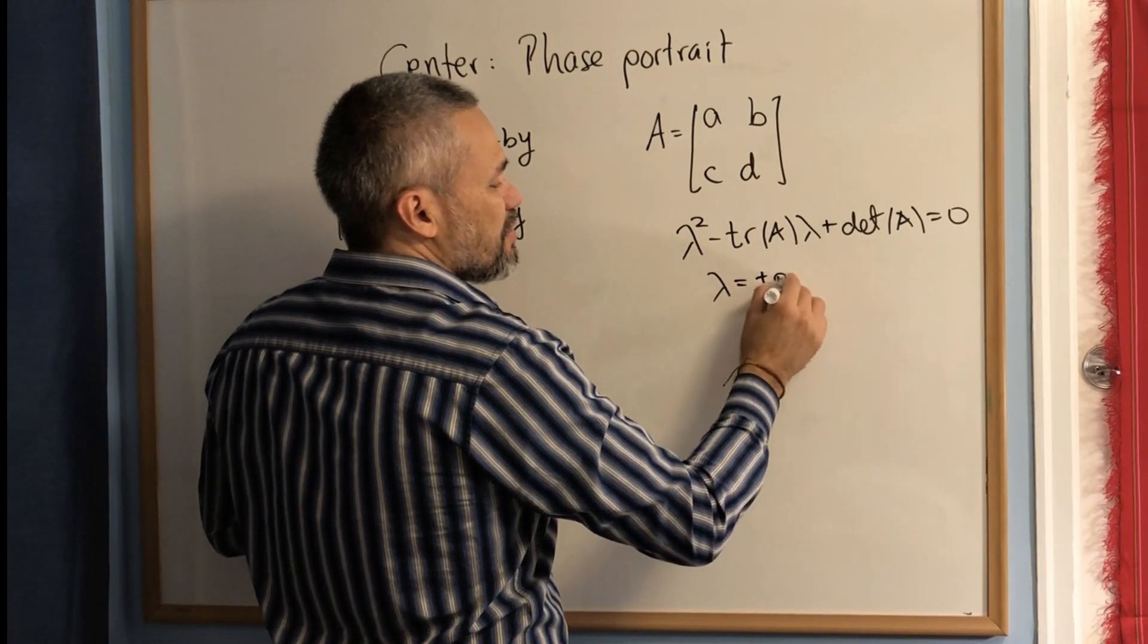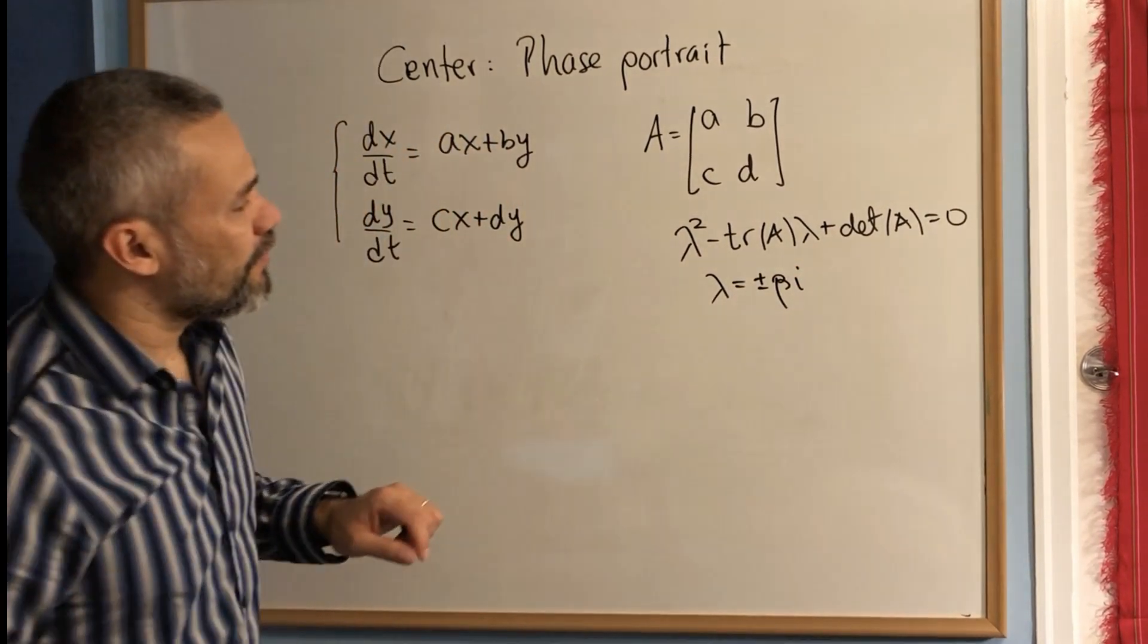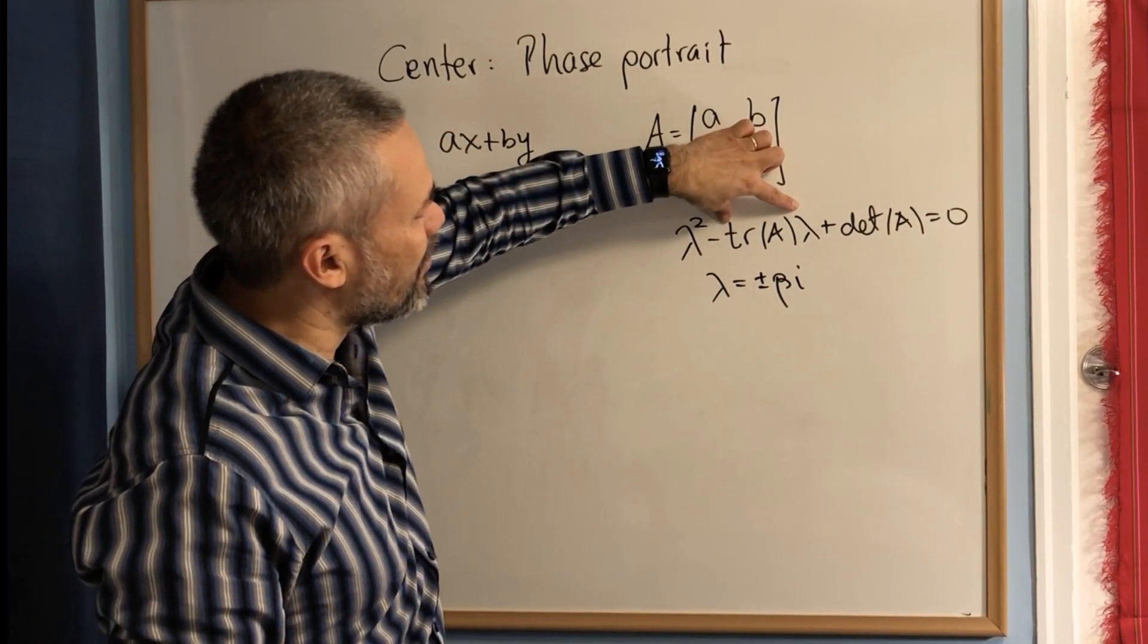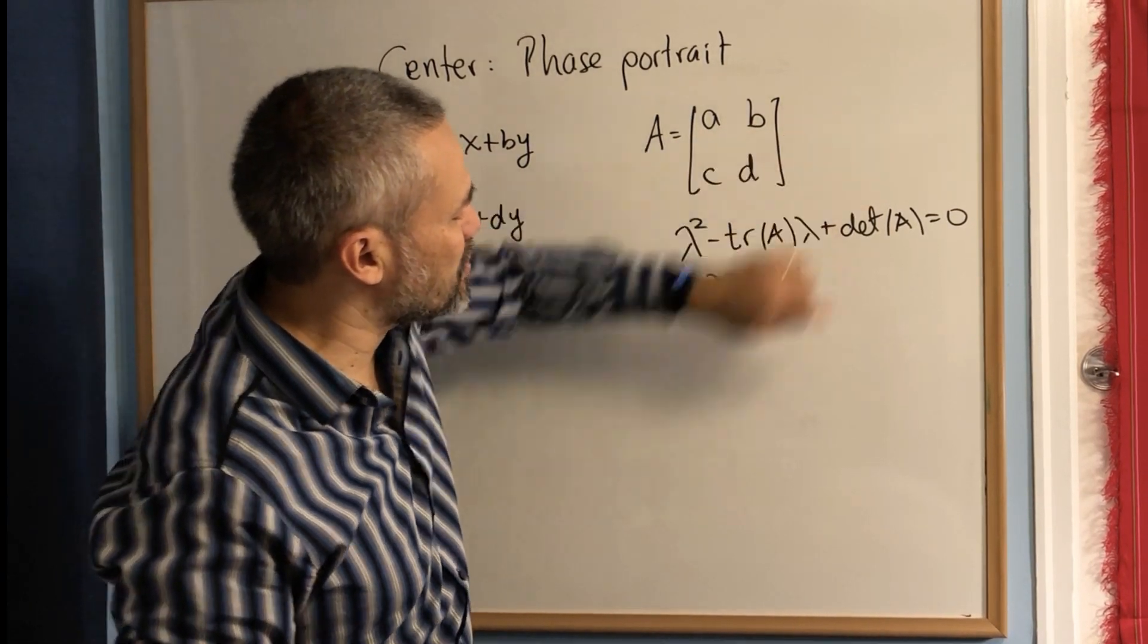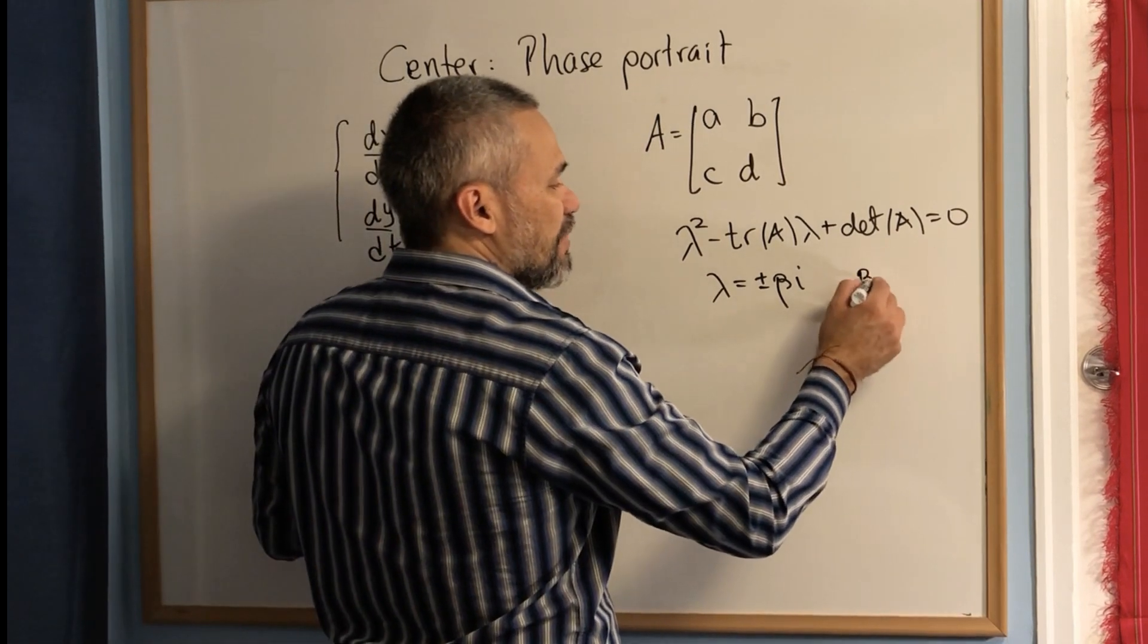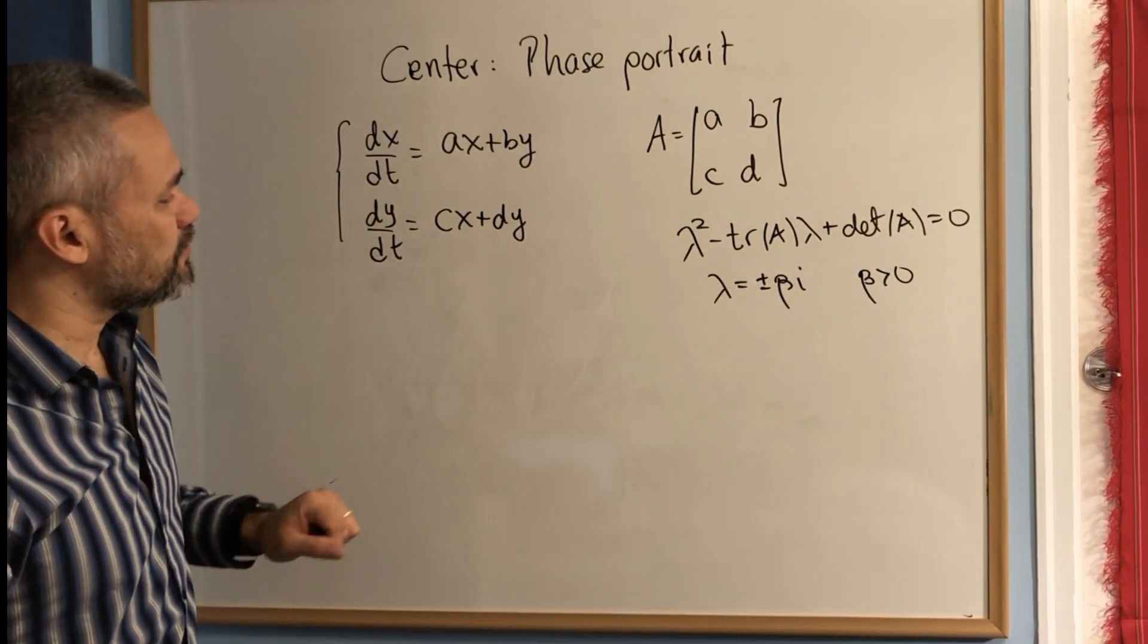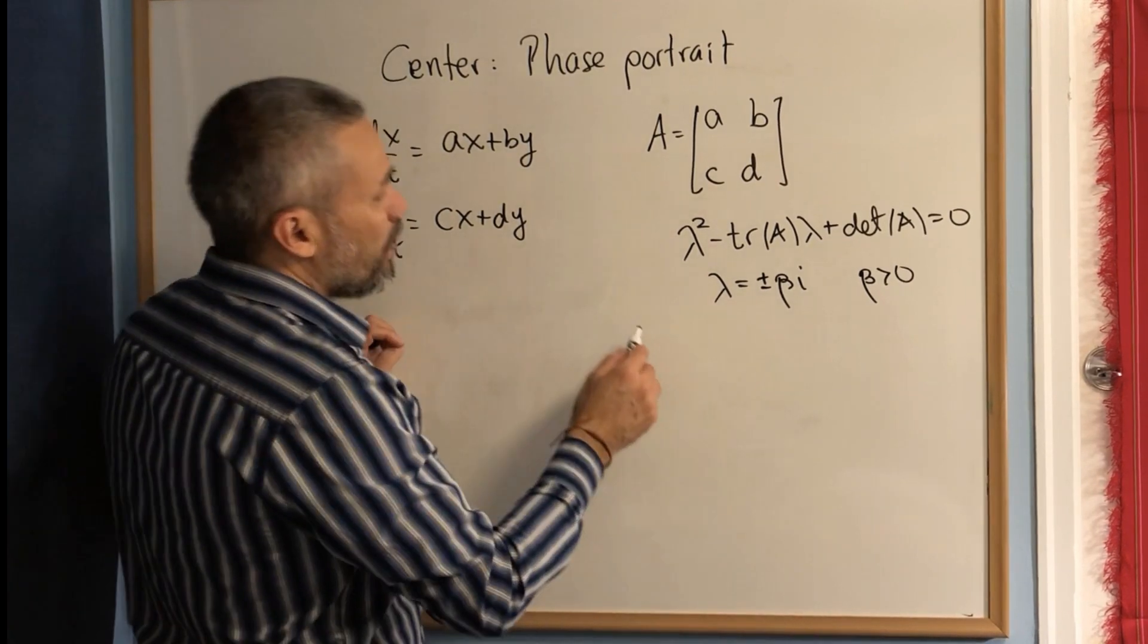Actually, that only happens when the trace is zero and the determinant is positive, and we're going to assume that β is bigger than zero. In this case, there are two ways to draw the center. One way is the easy way.